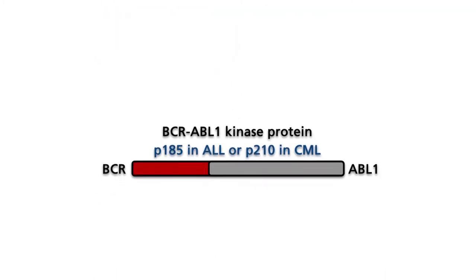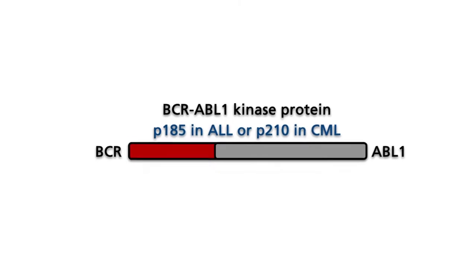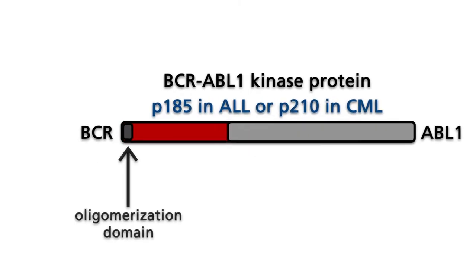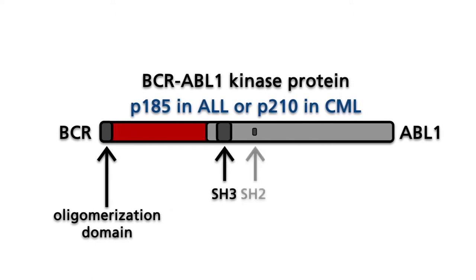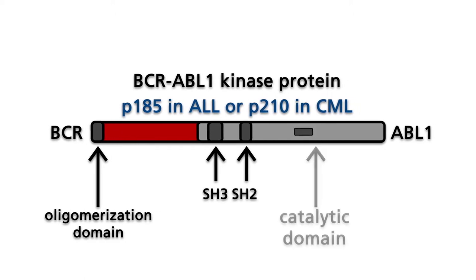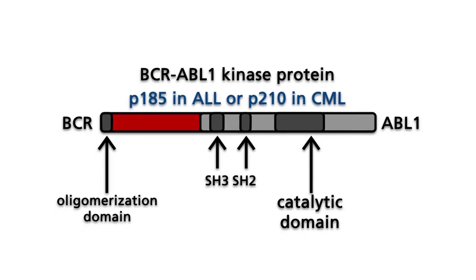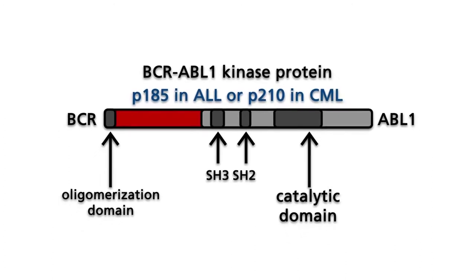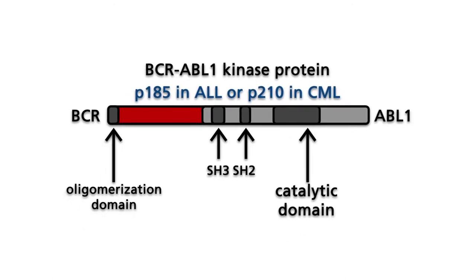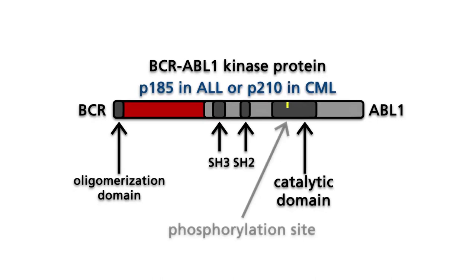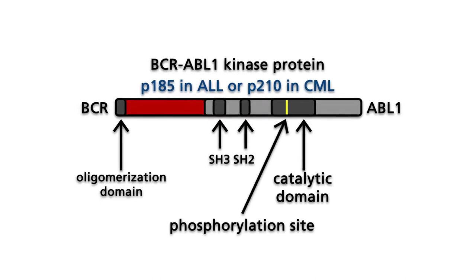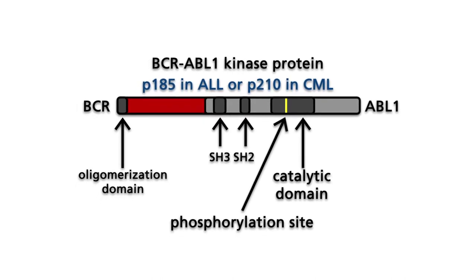In addition to other domains, the BCR-ABL enzyme includes the oligomerization domain of BCR, the SH3, the SH2, and the catalytic domain of ABL. Within its catalytic domain, there is a phosphorylation site that is important for regulating enzymatic activity.